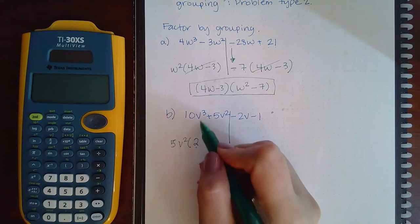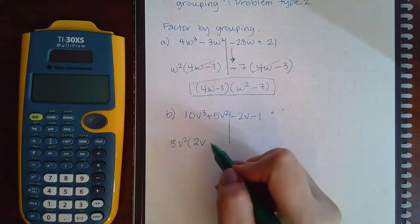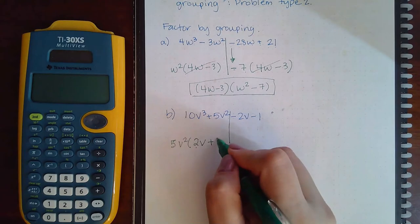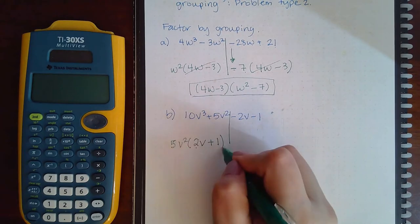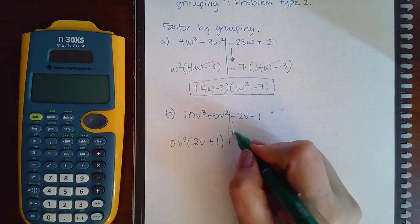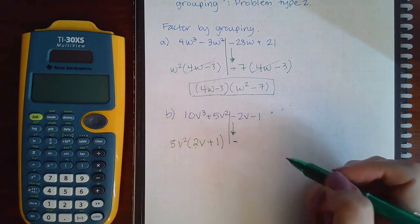Bring down the minus sign. These sides do not have anything in common, so use a 1. Negative 2v divided by negative 1 is a positive 2v, negative 1 divided by negative 1 is a positive 1.